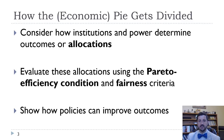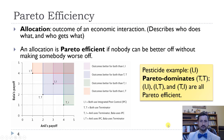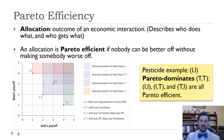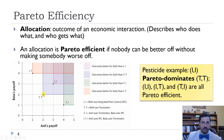We'll show how some policies can improve outcomes, whether that means making outcomes more Pareto efficient or more fair, keeping in mind that people might disagree about how fairness should be judged. Pareto efficiency is the idea that if something is Pareto efficient, we can't make one person better off without making somebody else worse off. There can be lots of Pareto efficient outcomes. Let's go back to our example of Anil and Bala using integrated pest control versus the Terminator. Remember that Terminator-Terminator was the Nash equilibrium for this Prisoner's Dilemma type game.